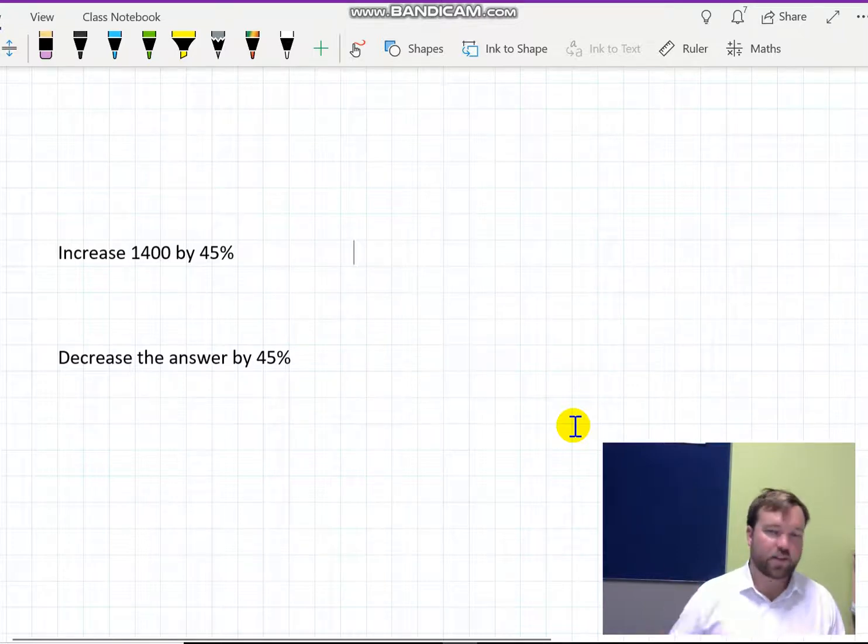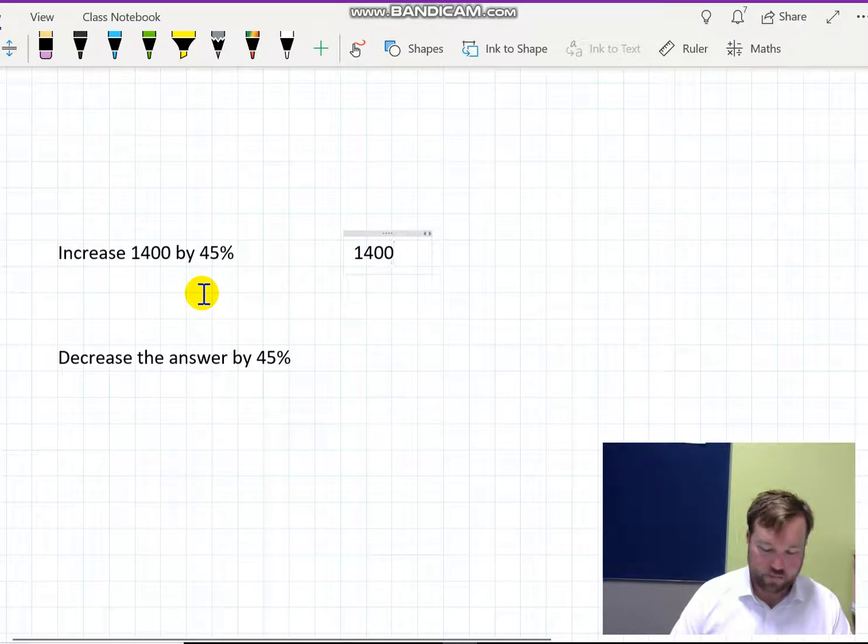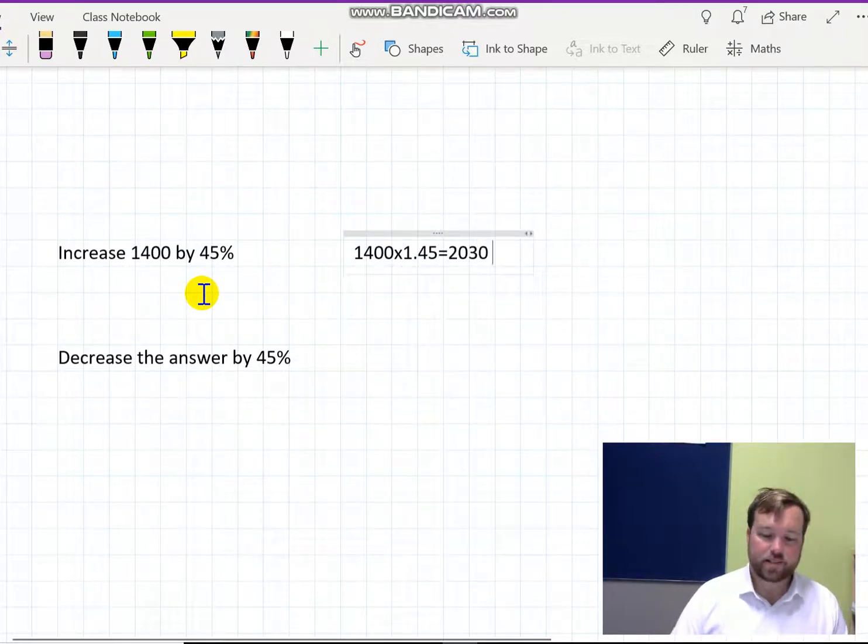Plenty of people think if you take $1, add 50% on, take 50% off, you get back at the same spot. But I want to show you why that's not true. So to increase 1,400 by 45% using the multiplier is that easy.